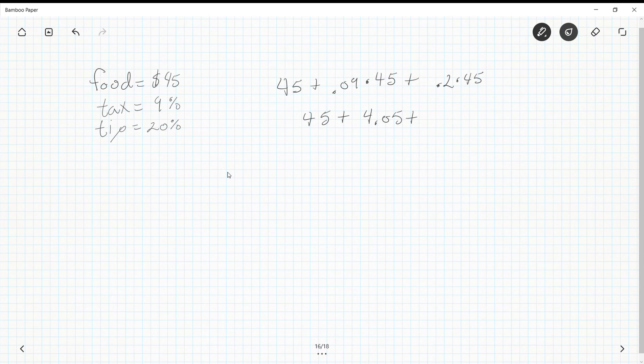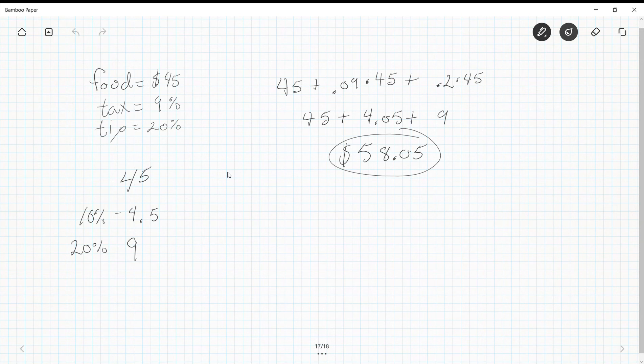If you ever want to learn this trick to do percents easily in your head, if 45 is my original, well 10% of 45 is just move the decimal point one place to the left, would be $4.50, and 20% would just be to double that because 20% is double 10%. So this is very helpful when you go to a restaurant and you just want to do a quick tip in your head. So if we add all this together, we get $58.05. This is the total cost of the meal.